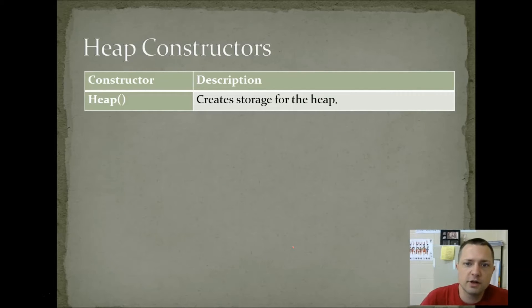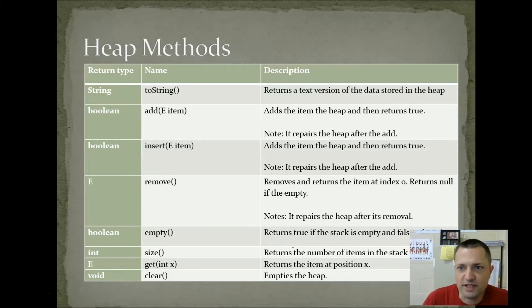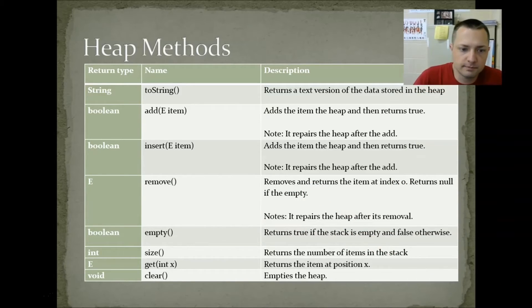A heap constructor creates storage for the heap. That's where you'll make your ArrayList. ToString gives you a text version of the data in the heap. AddItem adds the item to the heap. Insert, same thing as add. Two methods by the same name. Remove returns the item at spot zero or null if the list is empty. Empty tells you if the heap is empty or not. Size, how many items are in it. Get, you could access any item at a position, but we're not really going to be using that. And clear, destroy all the data.